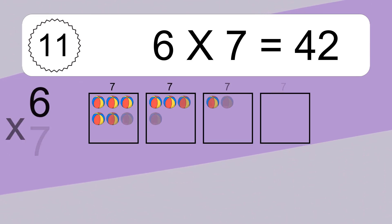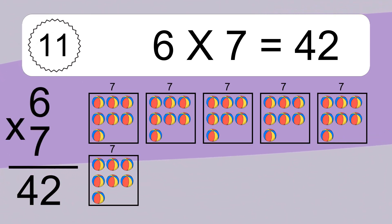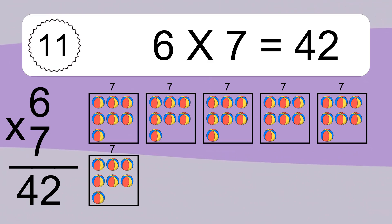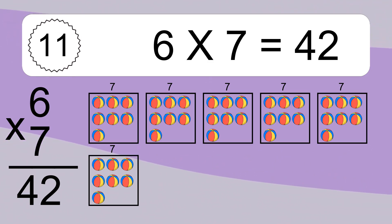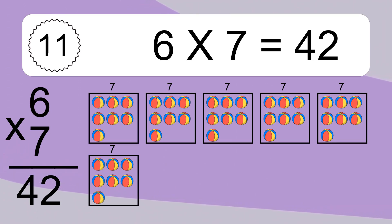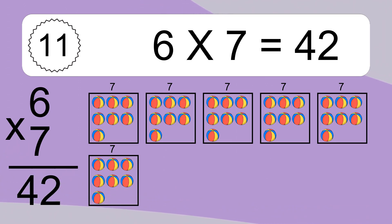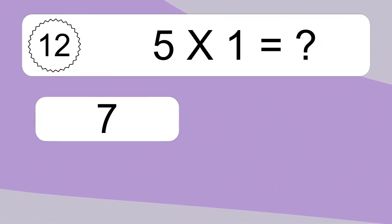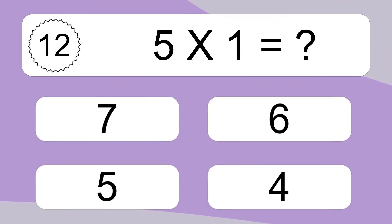6 times 7 equals what? 6 times 7 equals 42. We have 6 boxes, and each box has 7 colorful balls inside. If you count all the balls in all the boxes together, you will have 6 times 7 balls. This equals 42 balls.